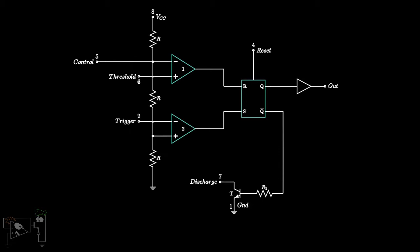This is how the internal block diagram of the IC looks like. First it contains a voltage divider circuit. This is followed by a block of comparators. This is connected to a flip-flop. We also have a discharge circuit.